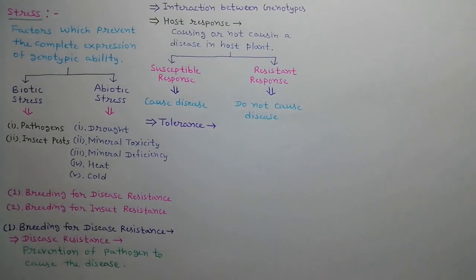Now, what is tolerance? When magnitude of disease is same in two plant varieties, but the yield of one variety is much more than other variety, then this character of first variety is called tolerance. It means variety 1 can tolerate the disease.